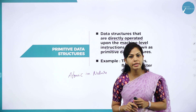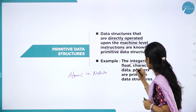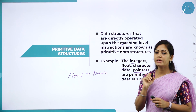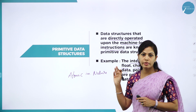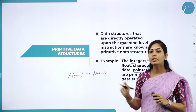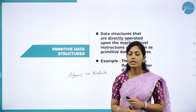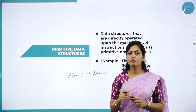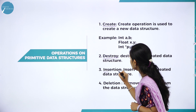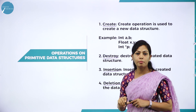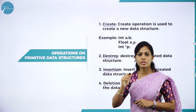Examples of primitive data structures are integers, float, character data, and pointers — these are called primitive data types, which we have studied in C language. Primitive data structures can perform some important operations: create, destroy, insertion, and deletion.